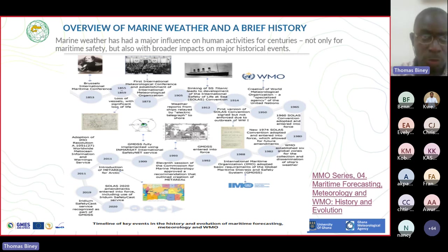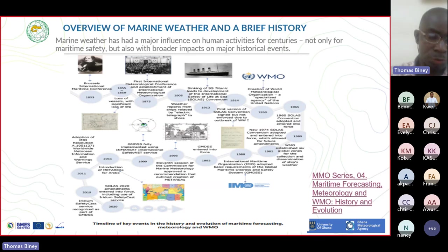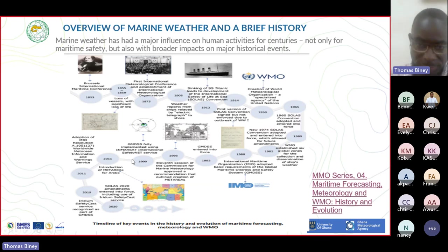Just as we have flight information regions in aeronautical meteorology, when we move into the seas or the ocean there has been a demarcation of the oceans across the globe. This is what we call MET areas. The oceans are vast - the Pacific, Atlantic, North Atlantic, South Atlantic - but there are demarcations including territorial waters. Each MET area has coordinators responsible for issuing forecasts.